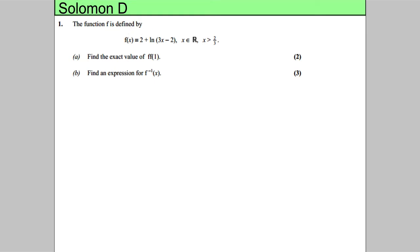This question has a function defined as 2 plus the natural logarithm of 3x minus 2. Notice the domain - x has to be bigger than two-thirds, so we can't have x less than two-thirds. That might be important to remember. Find the exact value of f(f(1)). This is quite straightforward - firstly, work out f(1).